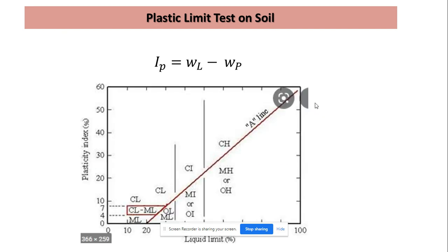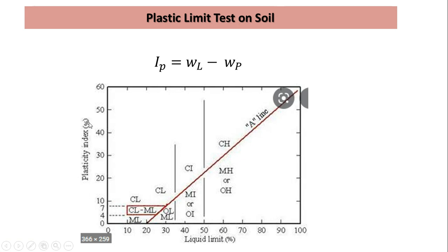As already noted, the liquid limit WL and plastic limit WP are not directly used for classification of soil. Instead, we calculate the plasticity index IP, where IP is the difference between the liquid limit and the plastic limit. Once we have the plasticity index, we use both the liquid limit and plasticity index to classify the soil using the plasticity chart, where the x-axis is liquid limit in percentage and the y-axis is plasticity index in percentage.